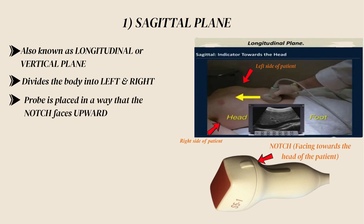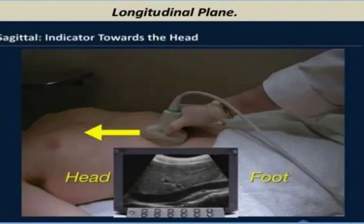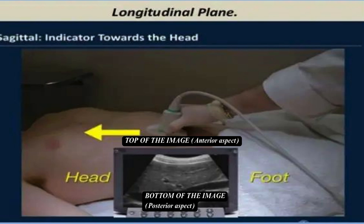In the sagittal plane, we put the probe in a way that its notch faces upward. The top of the image points toward the anterior aspect of the body, the bottom points toward the posterior aspect, the left side of the image points toward the patient's head, and the right side points toward the feet.